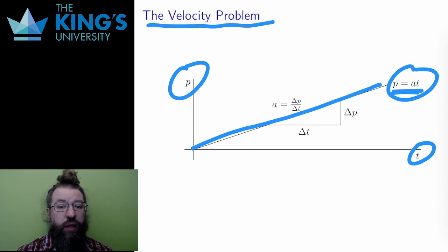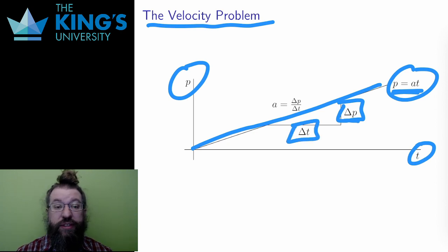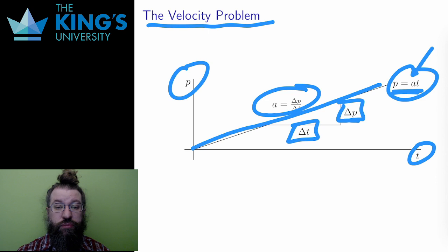What is that velocity? Well, velocity is how much distance the object moves per unit time — the change in distance over the change in time. The change in position is delta p, the rise of the slope. The change in time, delta t, is the run of the slope. And the ratio is the slope. So if an object moves with a constant velocity, its position graph is a straight line, and the slope of that line is the velocity of the object.